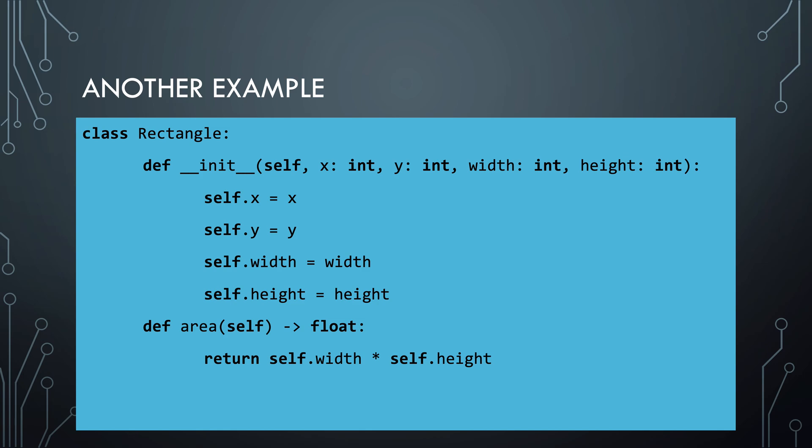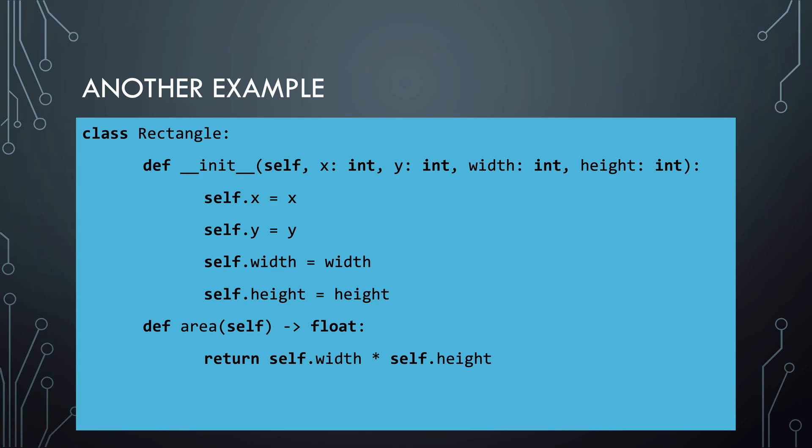Here's another example. This is a rectangle class with an x value, y value, width, and height. There's also a method that computes the area of the rectangle, which you get by multiplying its width and height. Yet another way to provide structure in your code is by using class inheritance. Inheritance allows you to group classes that are very similar, and you can specify in what ways they operate in the same way. For example, a rectangle and a circle are both shapes, and they both have an area.